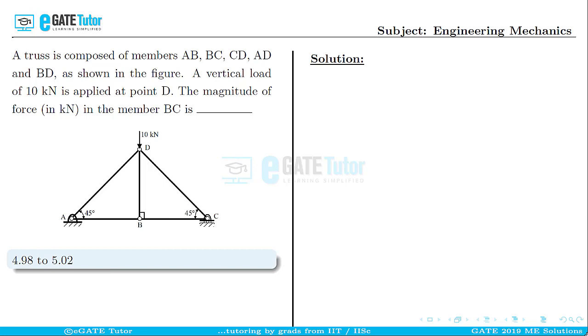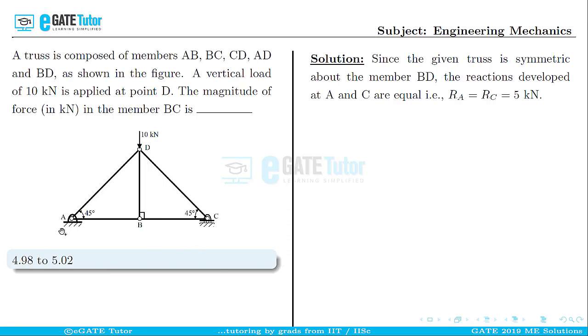If you look at the given truss configuration, it is to be observed that the truss is symmetric about member BD. Therefore, in such cases, the reaction forces at A and C will be equal and equal to half of the applied load of 10 kN. Therefore, the reaction forces are RA = RC = 5 kN.